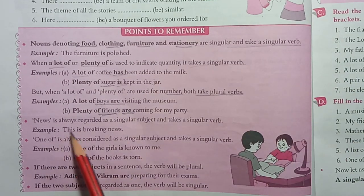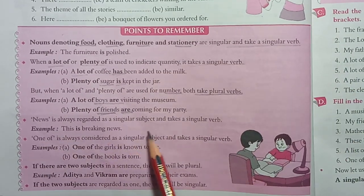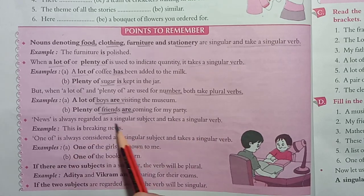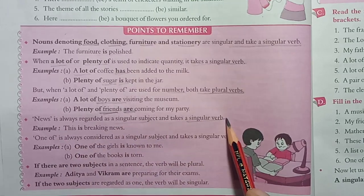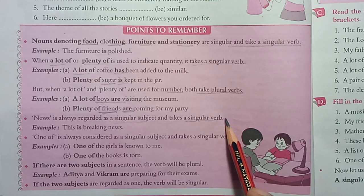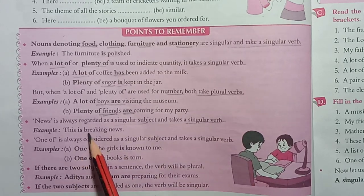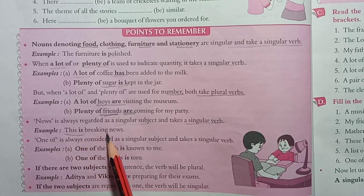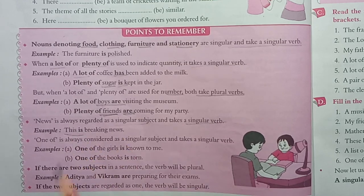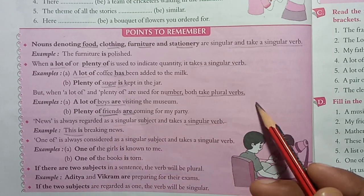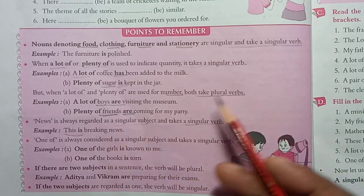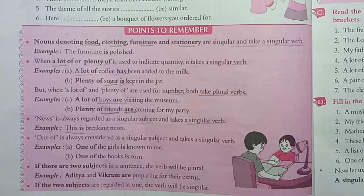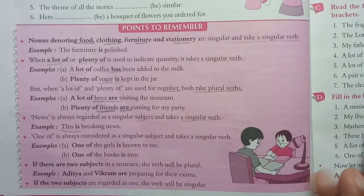News is always regarded as a singular subject and takes a singular verb. For example: 'This is a breaking news.' 'This news is true.' You cannot use 'are' with 'news' — always use 'is'.